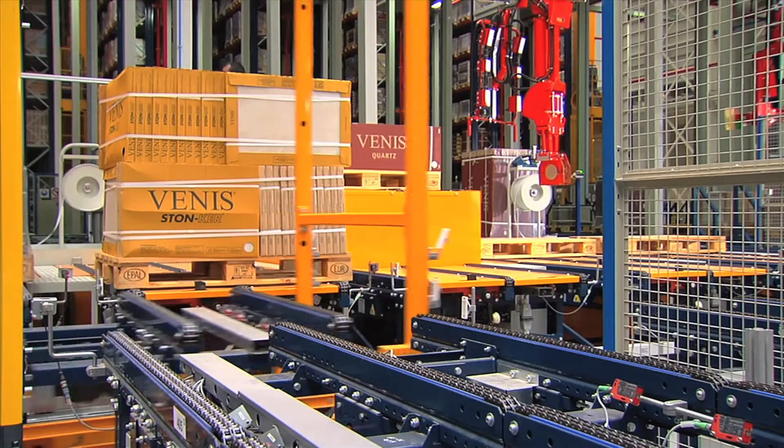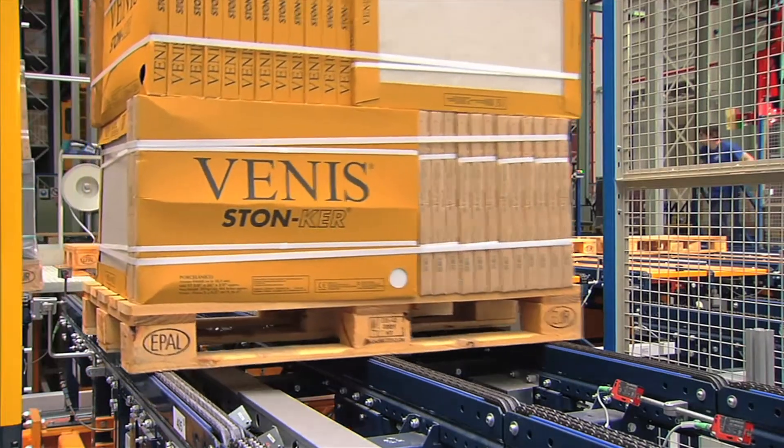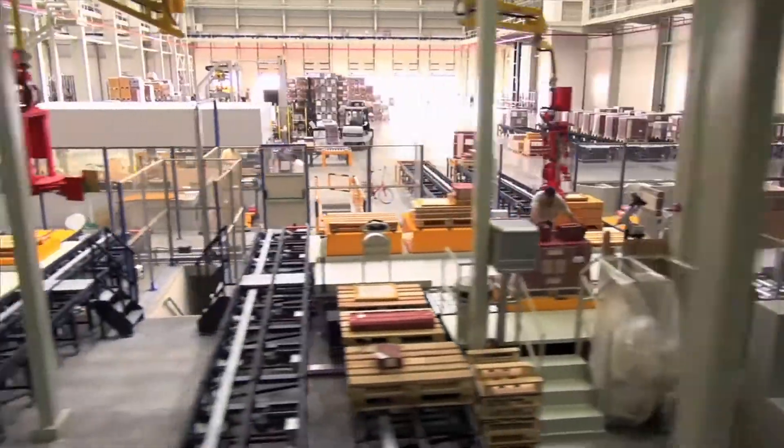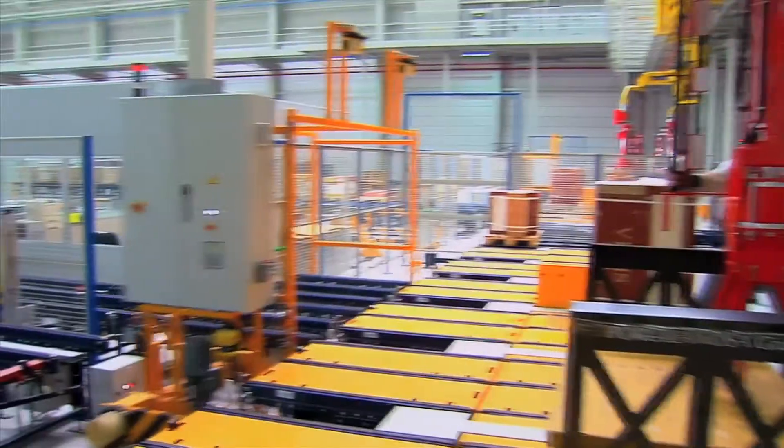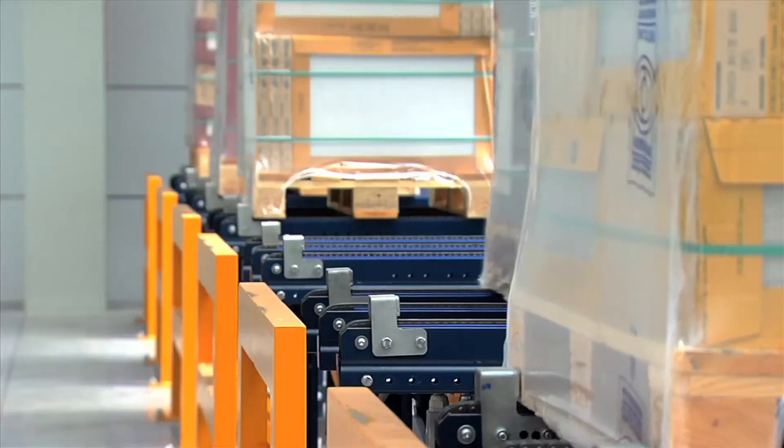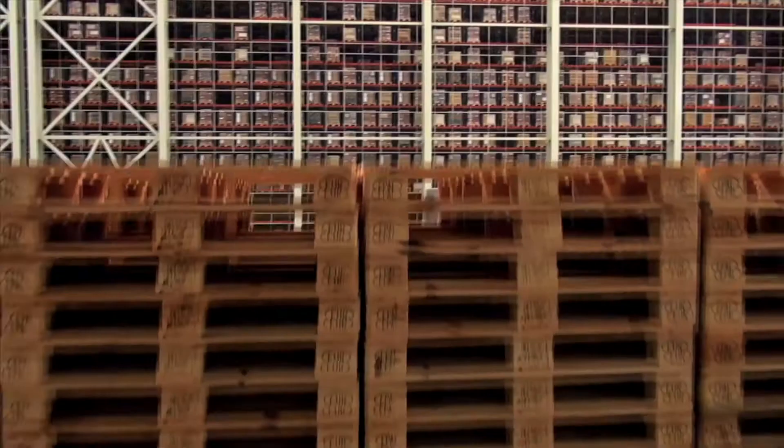The Mecalux EZ Warehouse Management software controls the preparation and dispatching, enabling four orders to be completed at a time at each picking post. Two double shuttles run along the picking aisles, keeping the safety distance and distributing the loads on the output tables.